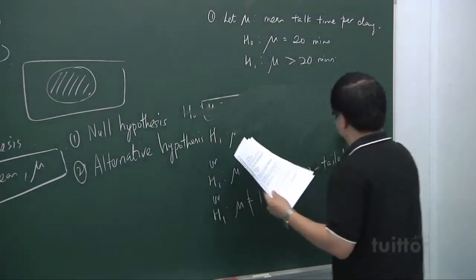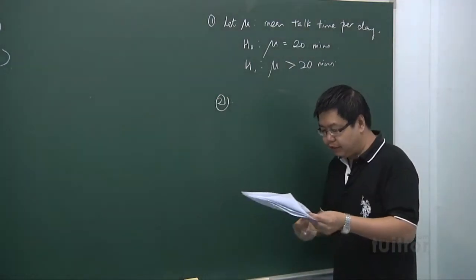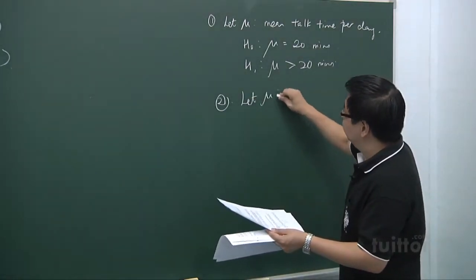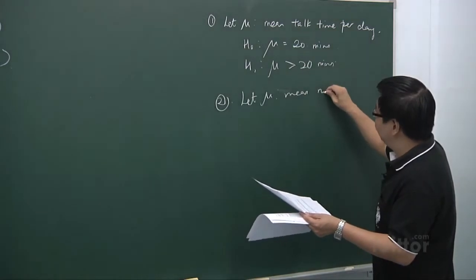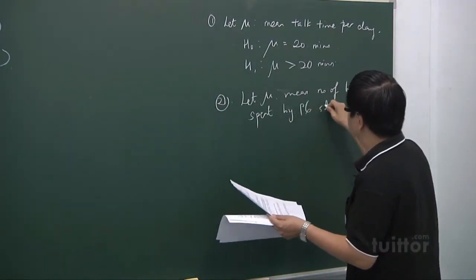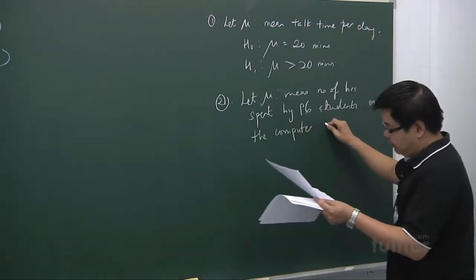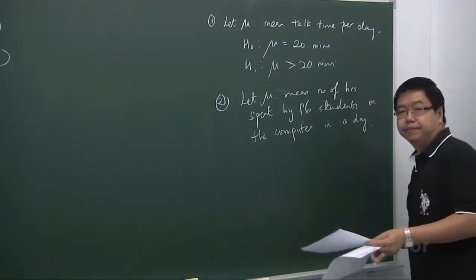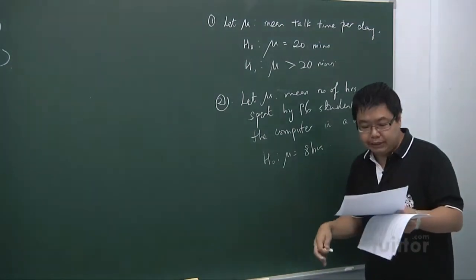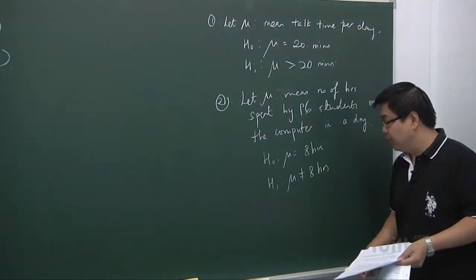The second example: a teacher in a primary school claimed that the average number of hours spent on a computer by P6 students is 8 hours, and many students disagree with her claim. We let mu be the mean number of hours spent by P6 students on a computer in a day. H0 is mu equals 8 hours, and because many students disagree, we test mu equals 8 versus mu not equals 8 hours — a two-tail test.